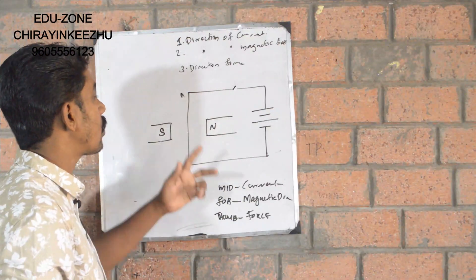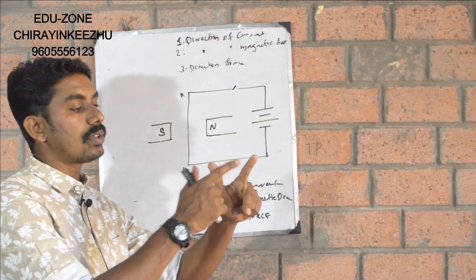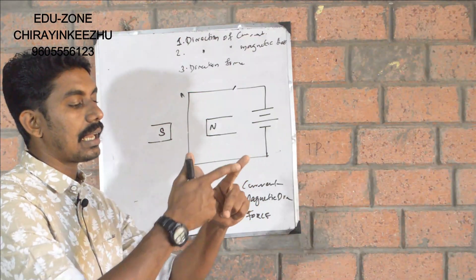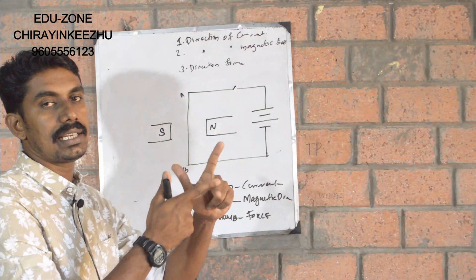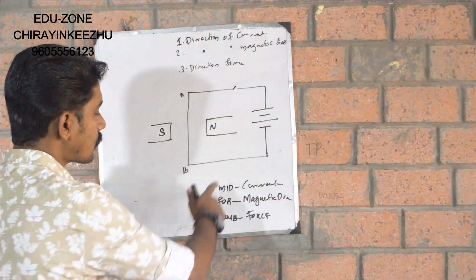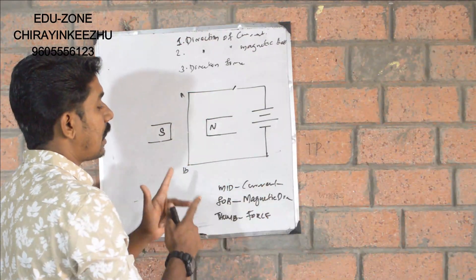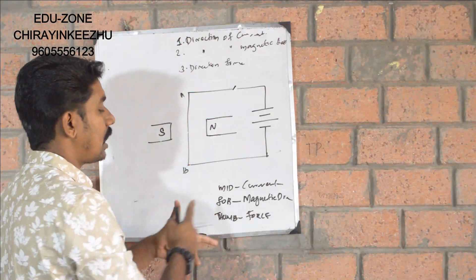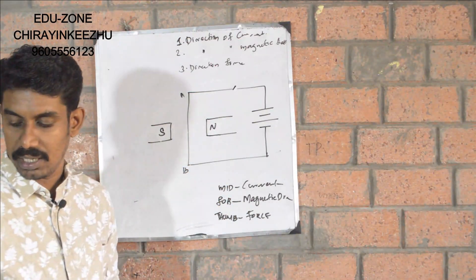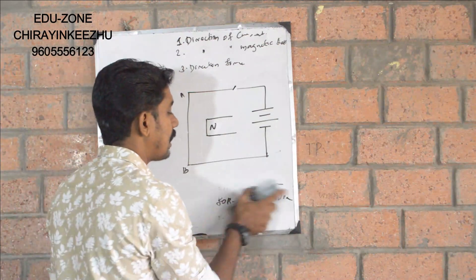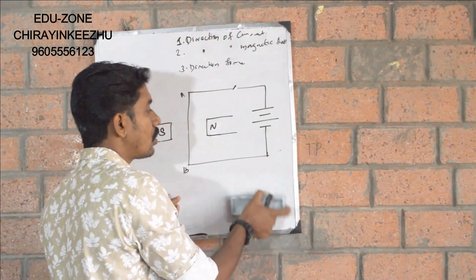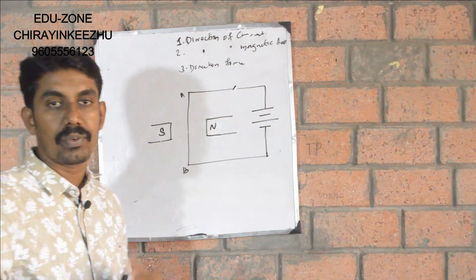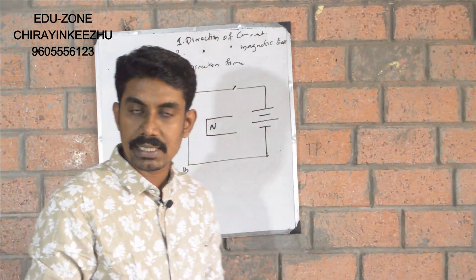This is Fleming's Left Hand Rule. We stretch the three fingers — middle finger, forefinger, and thumb — to 90 degrees, perpendicular to each other. If the middle finger is in the current direction, the forefinger is in the magnetic field direction, and the thumb is in the force direction. This is Fleming's Left Hand Rule.